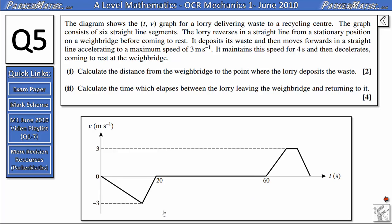So if it started from the weighbridge, gone away and come back, the displacement away from the weighbridge, this part of the graph here, must be the same as the displacement on the way back to the weighbridge here.